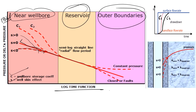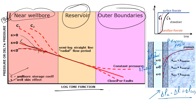Looking at the pressure profile: for ideal skin zero, ΔP_ideal is the pressure drop. When skin > 0, ΔP_actual > ΔP_ideal because ΔP_actual = ΔP_ideal + ΔP_skin. When skin < 0, ΔP_actual is less than ΔP_ideal. That is why we observe different pressure trends for different skin values.